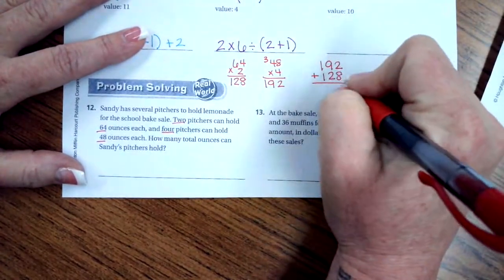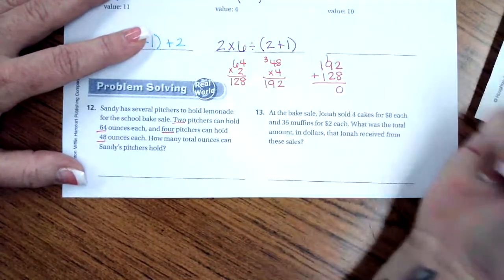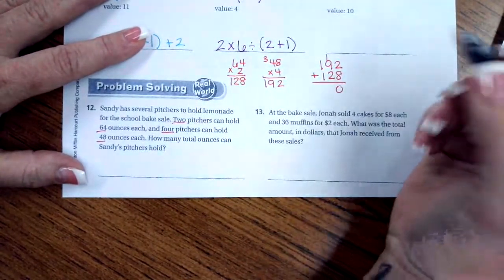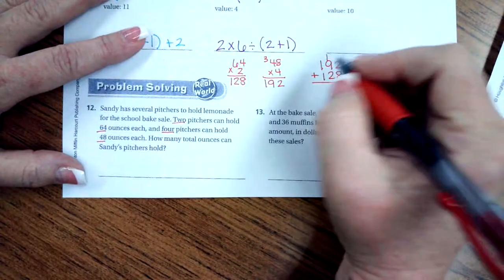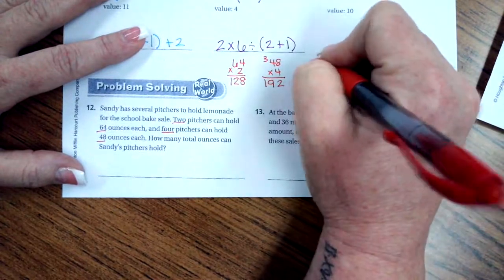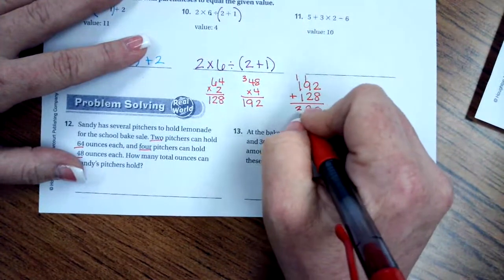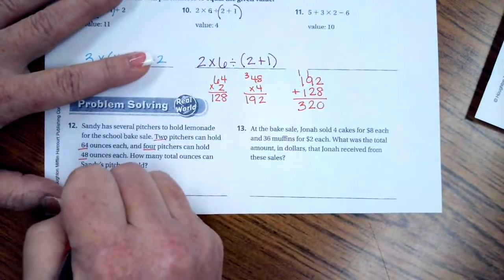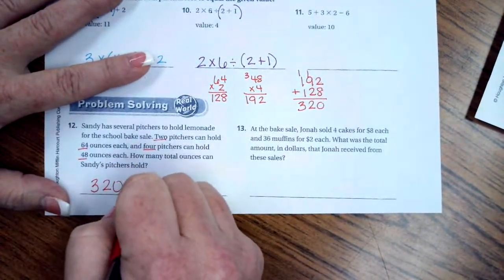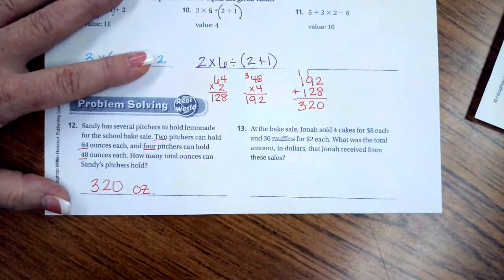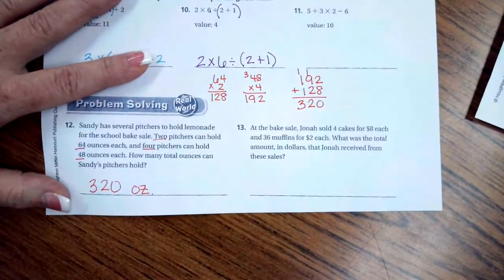So 2 plus 8 is 10. So I got 0 down, carried my 1. 1 plus 9 is 10, plus 2 is going to be 12. And then 1 plus 1 plus 1 is 3. So 320 ounces. O-Z means ounces. So you can write that.